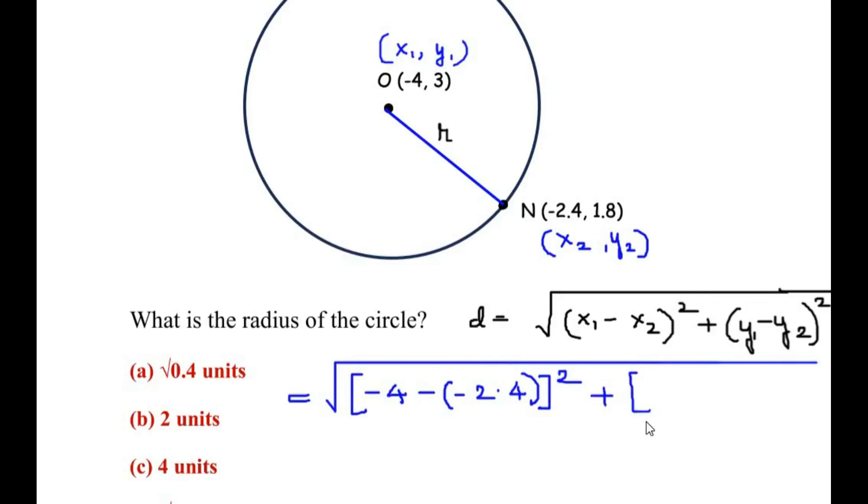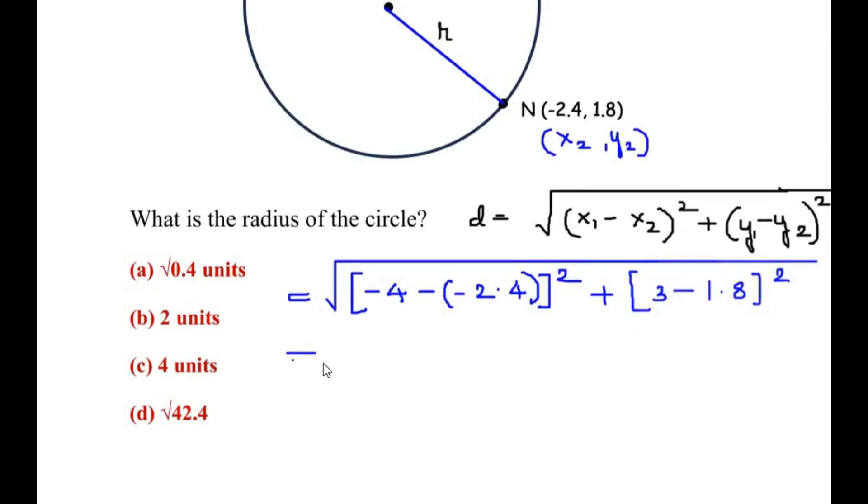Plus we have y₁ as 3 minus, which is in the formula, and y₂ is 1.8, the whole square.